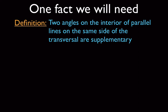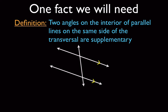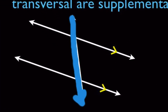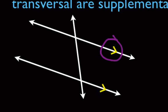One thing we're going to be given to start off here is that two angles on the interior of parallel lines on the same side of the transversal are supplementary. This line right here is the transversal — that's the name of a line that cuts across two parallel lines. The way we note that those lines are parallel is with arrows. Those two arrows signify parallel lines.